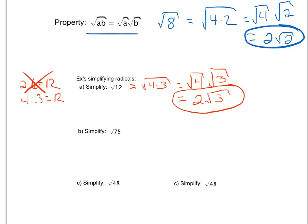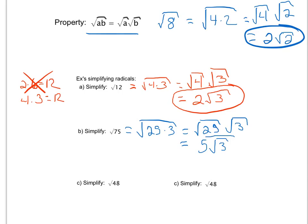Looking at the square root of 75, I'm going to do the same thing and ask myself: can 75 be divided by any perfect squares? I look at my perfect squares list — it cannot be divided by 4, it can't be divided by 9, it can't be divided by 16, but it can be divided by 25. In fact, 75 is the same thing as 25 times 3, which according to the property is the square root of 25 times the square root of 3. The square root of 25 is just 5; I do not know the square root of 3, so I leave it under the radical. My simplest form is 5 times the square root of 3.